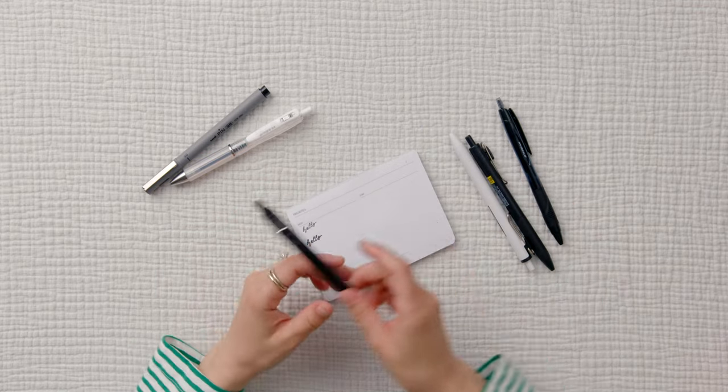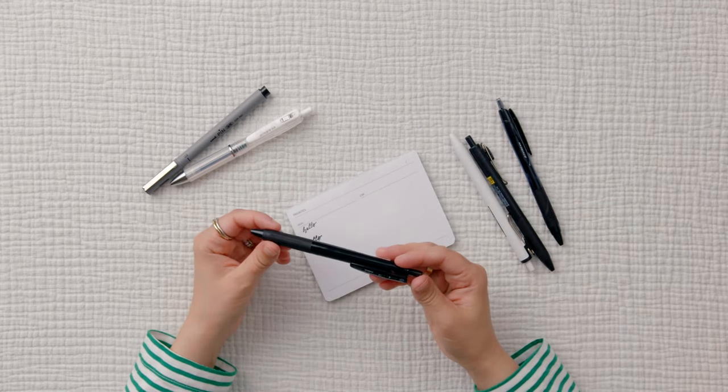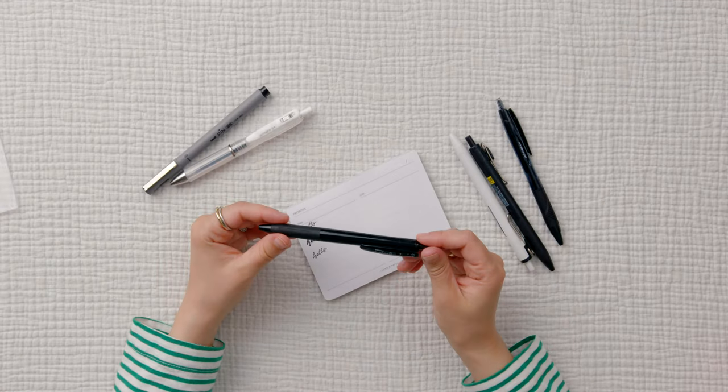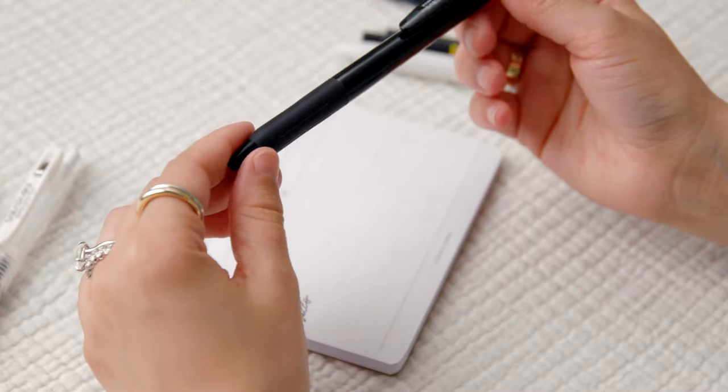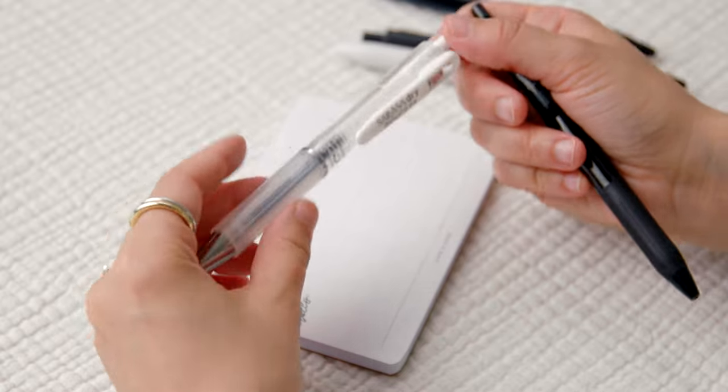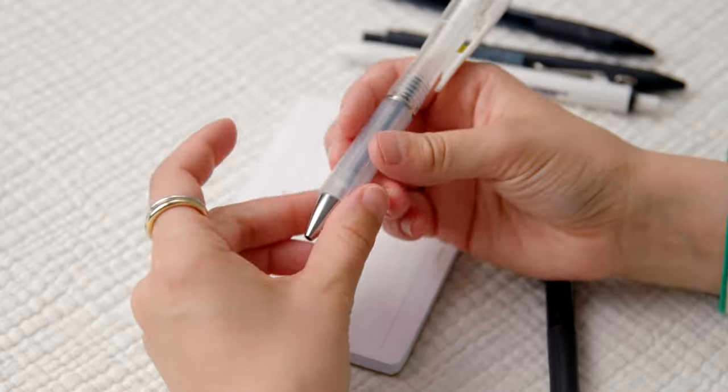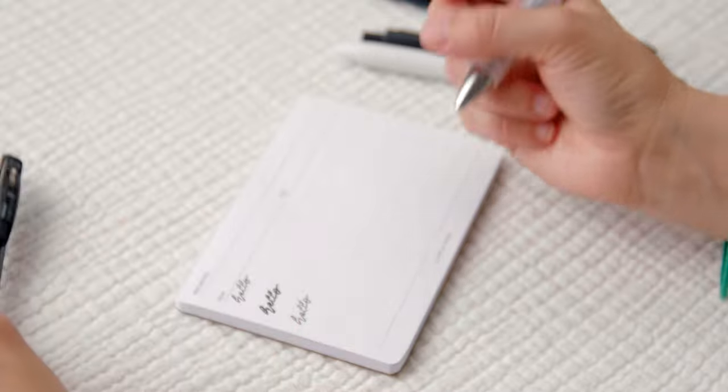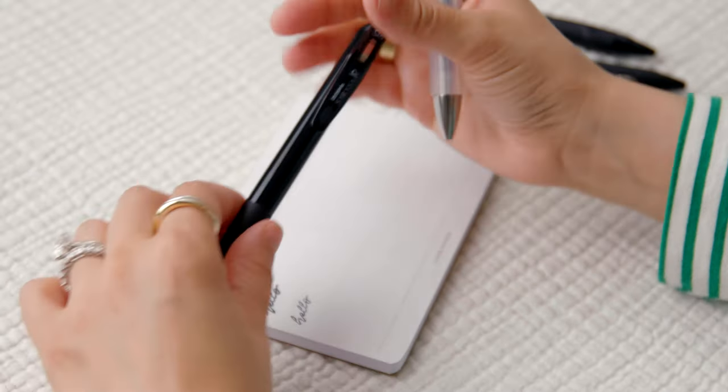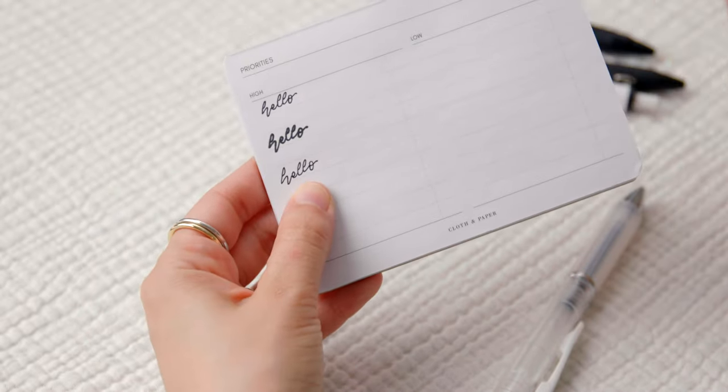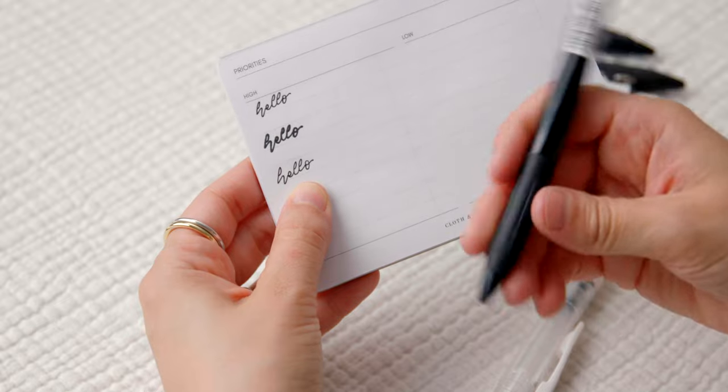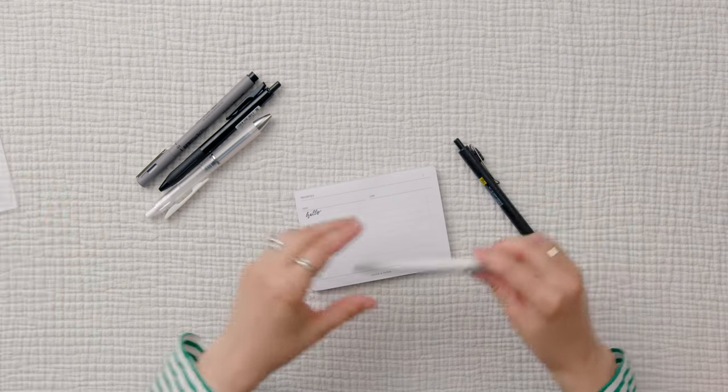The next pen that I picked up is the Zebra Sarasa R in 0.4. This kind of just feels like a normal pen. Not anything too special. I will say that I do like the Sarasa Dry more just because now that I have this grip, it's just so much easier to write and I tend to write pretty hard. So this one, I don't have much stability when I'm writing with this one.